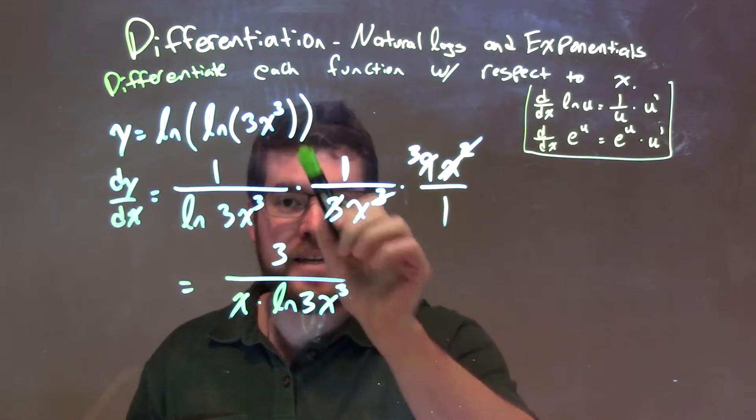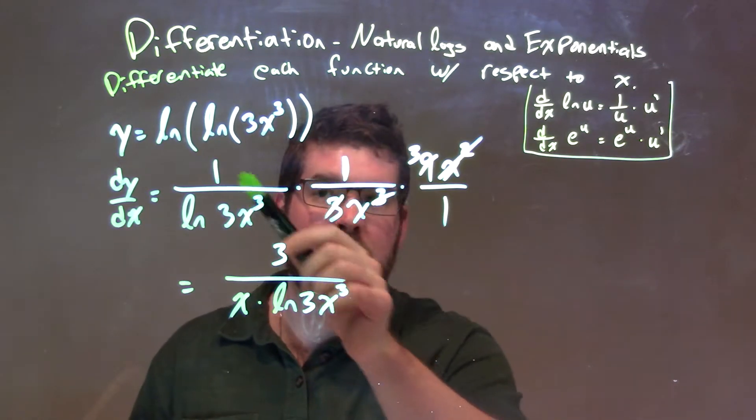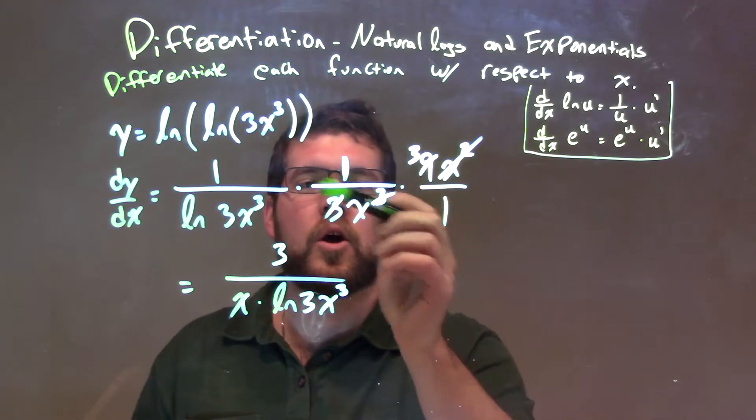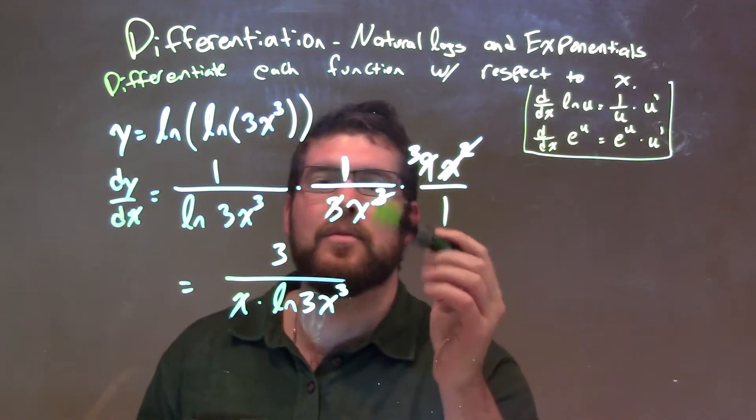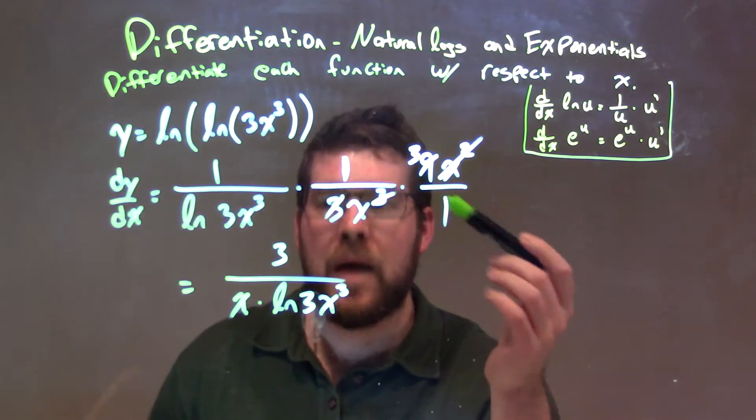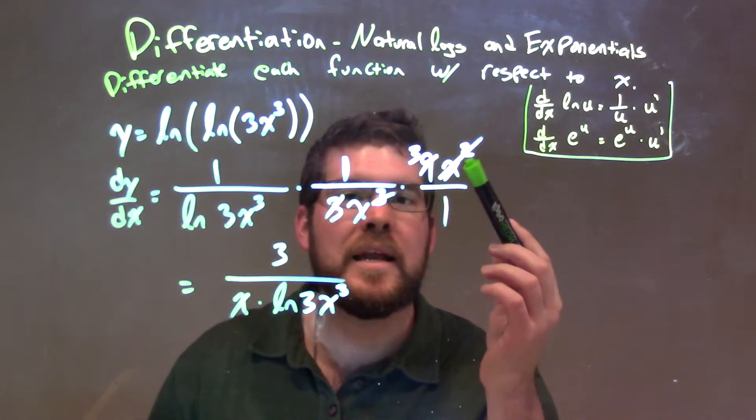Times 1 over the inside of that, right? We're going to chain rule, derivative of the inside, which involves the natural log rule again, 1 over 3x to the third, times the derivative of 3x to the third, which is 9x squared. At that point, we've taken the derivative, and we need to simplify.